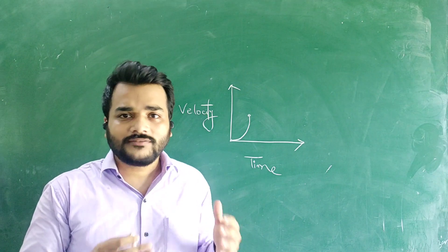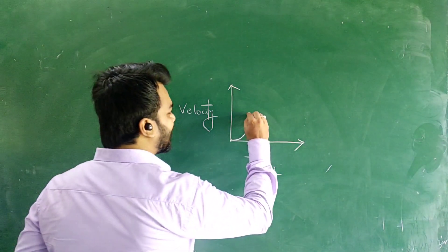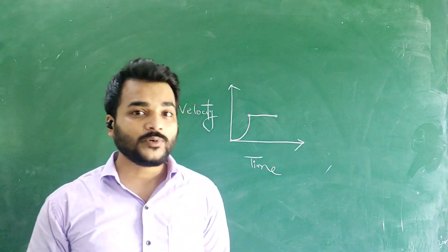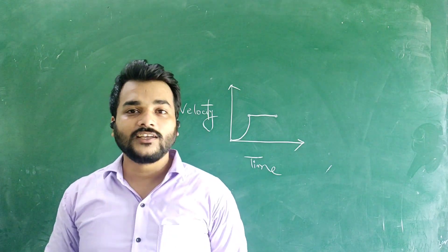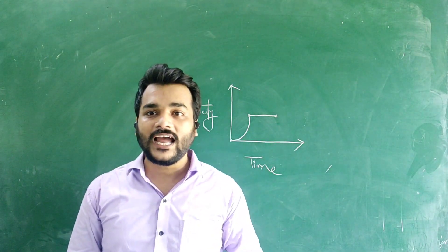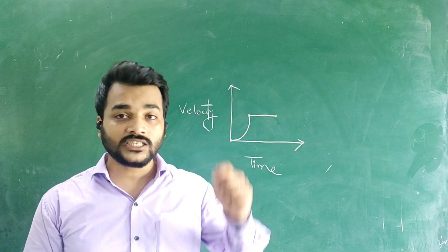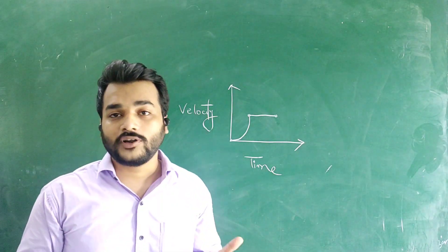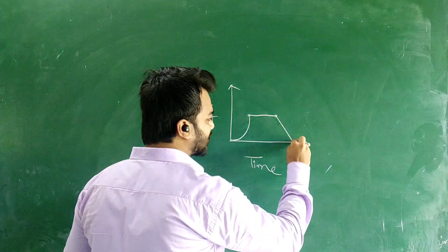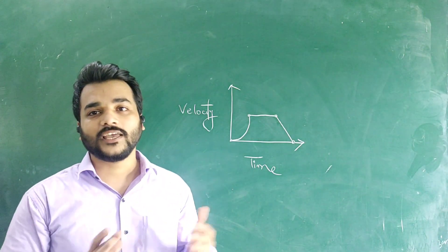Now let's make constant velocity. Constant velocity means time is increasing but the value of velocity is not changing. So a straight line parallel to the x-axis on a velocity-time graph represents constant velocity — also known as zero acceleration. And for uniform retardation, a straight line moving in the downward direction towards the x-axis shows uniform retardation. So we have involved all three quantities in one single graph.